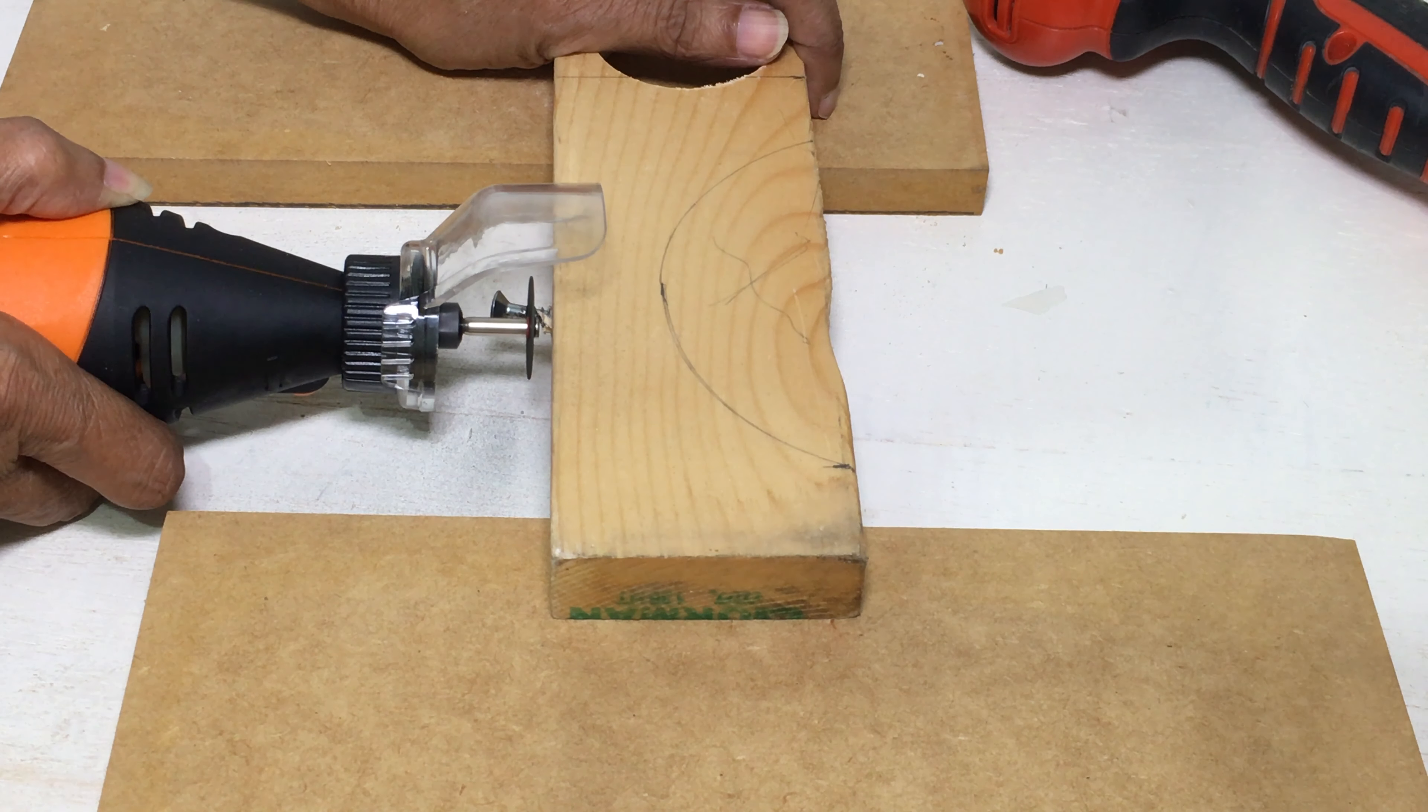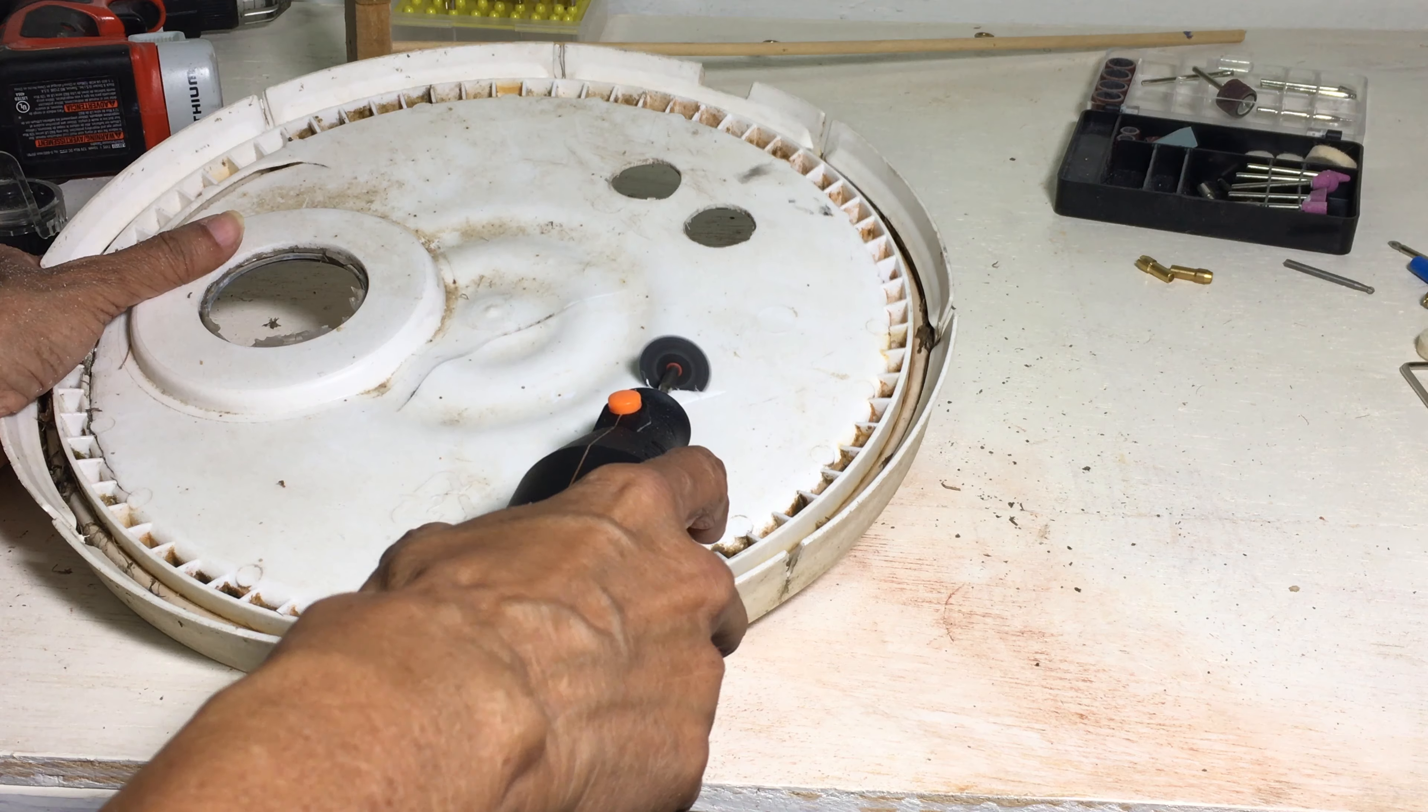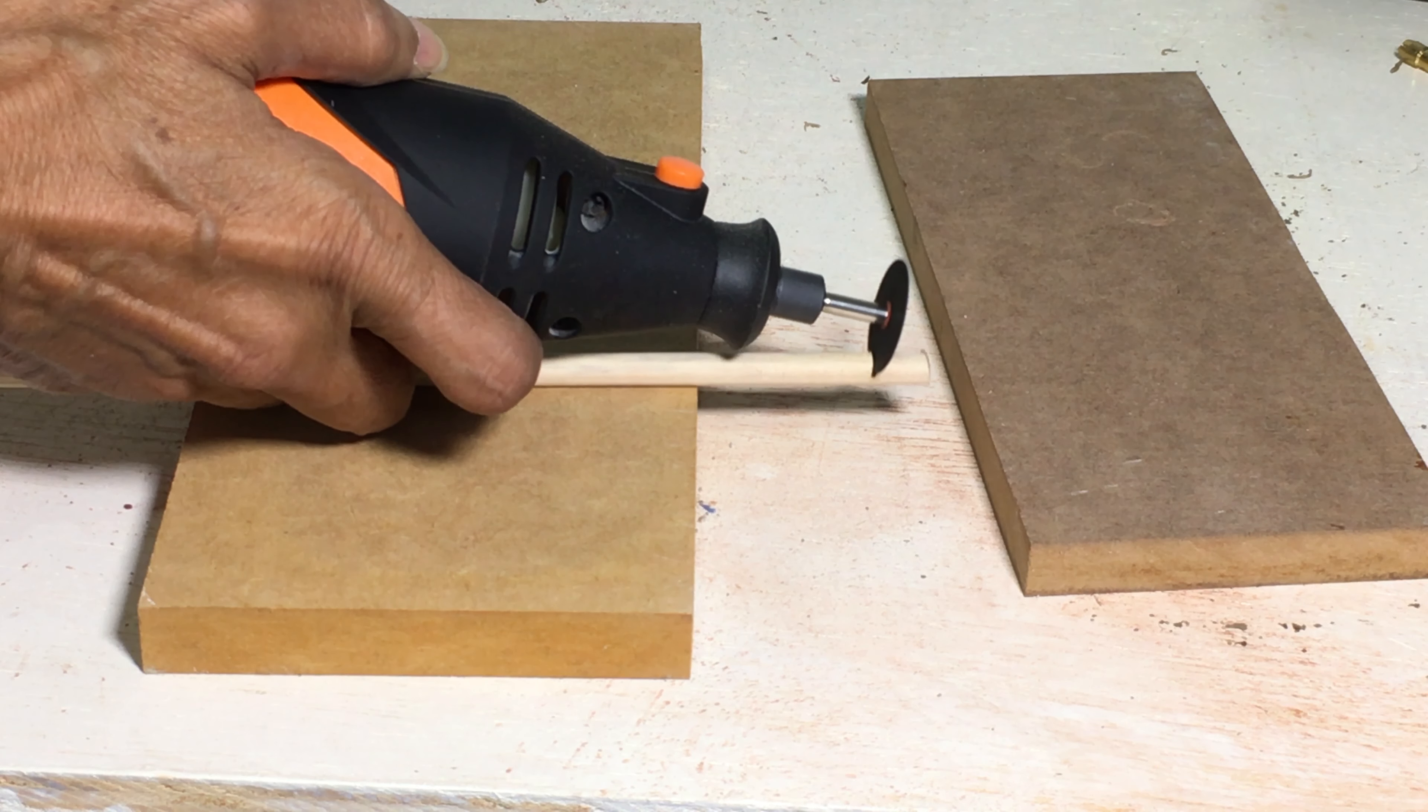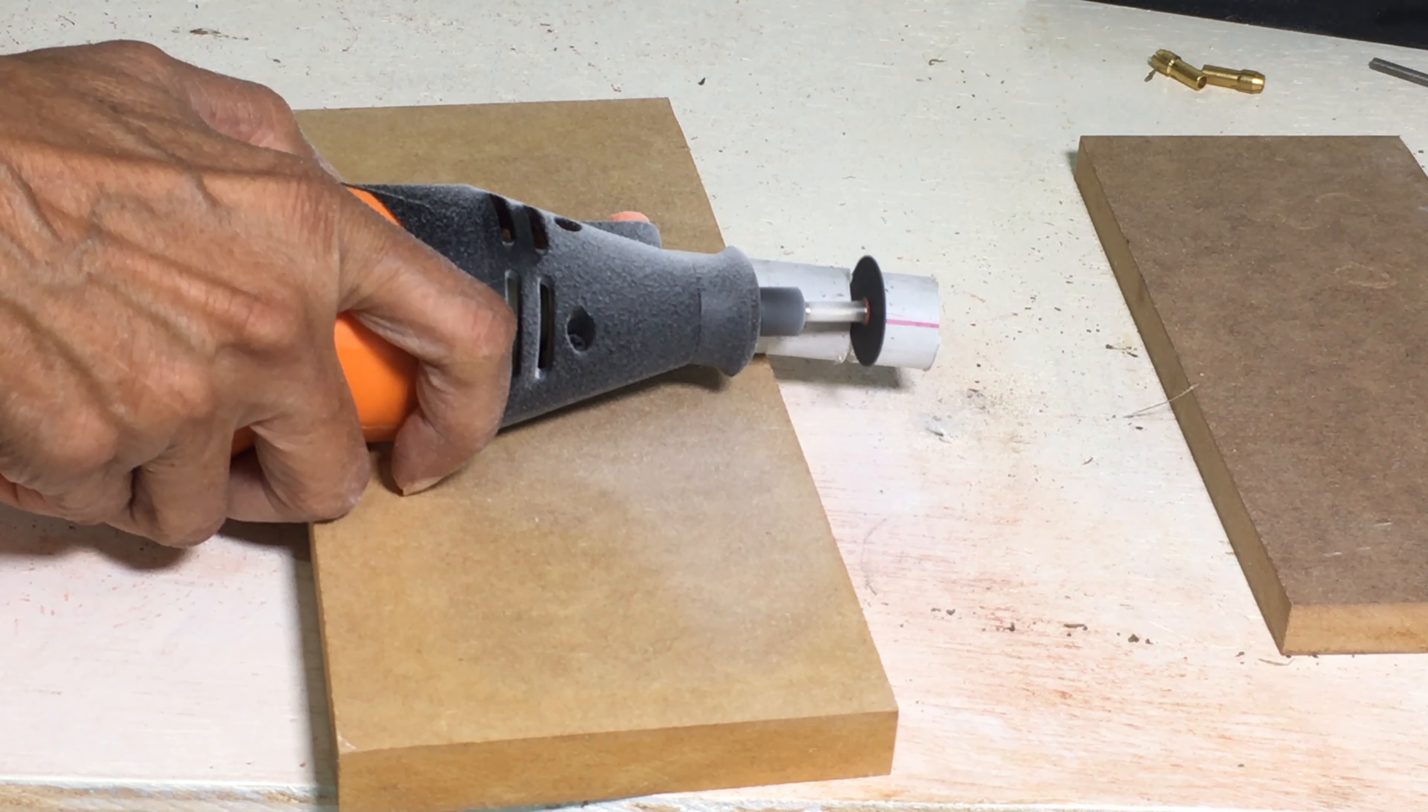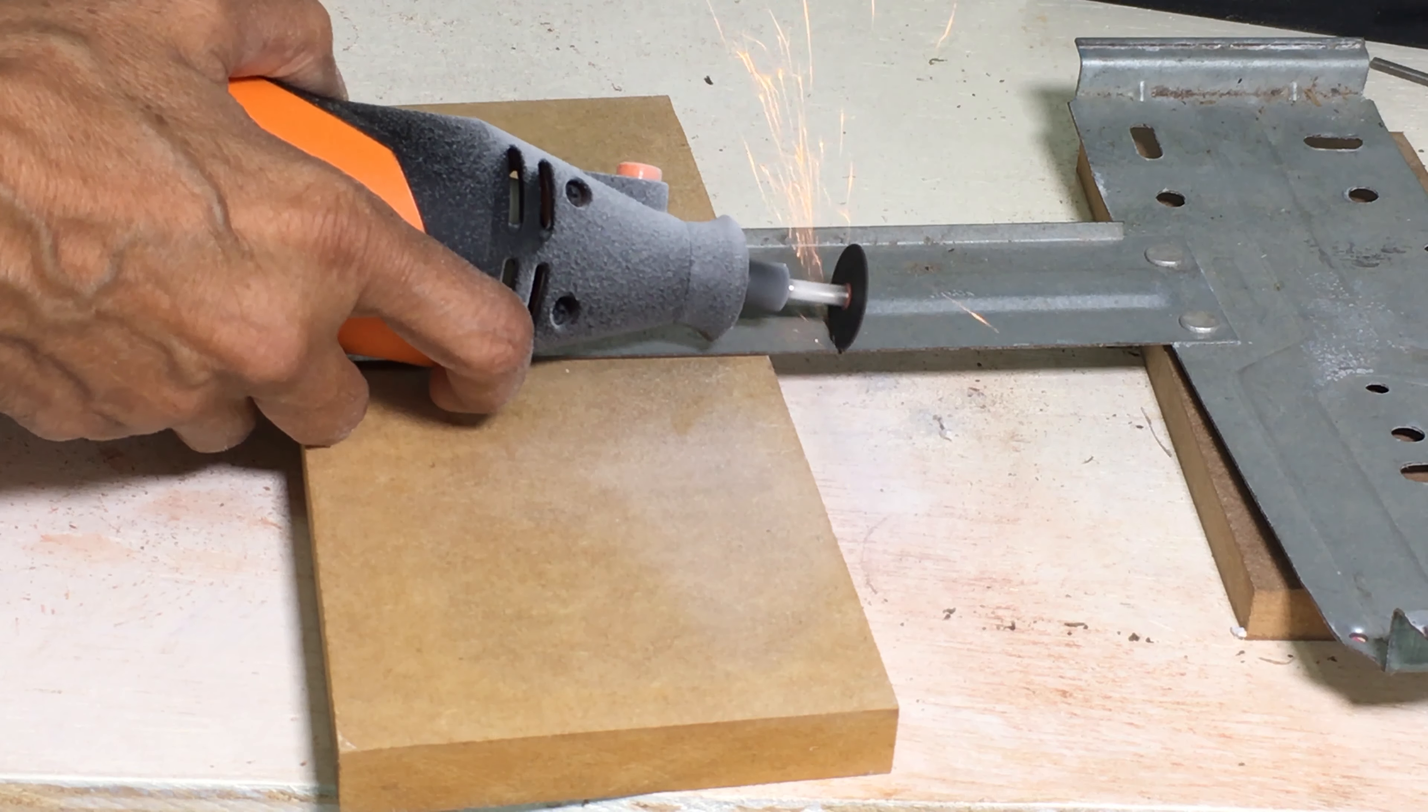The cut-off wheel can be used to cut nails and screws, plastic, sticks, tin, wood, PVC, and sheet metal. Use this tool to only cut straight lines. No curves.